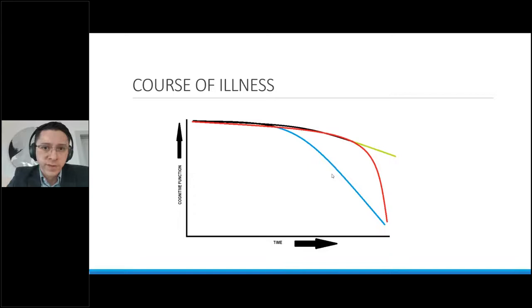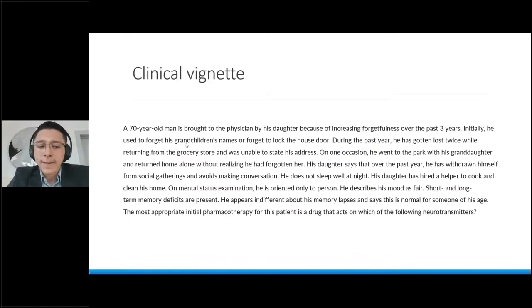And that is something very important to discuss with family members once we've established a diagnosis of Alzheimer's disease. So, we're going to treat it. We're going to be aggressive with it while being very cautious, but also we're going to know that what we're trying to do is preserve that quality of life as much as we can. But eventually, they will need to have a discussion about adding a caregiver, changing the setting, removing dangerous items, because this will happen. We still have a few minutes, so let me just throw this clinical vignette. I'm going to put things together with what we just discussed. A 70-year-old man brought to the physician by his daughter due to increasing forgetfulness over the last three years. Initially, used to forget the grandchildren's names and forget to lock the house door.